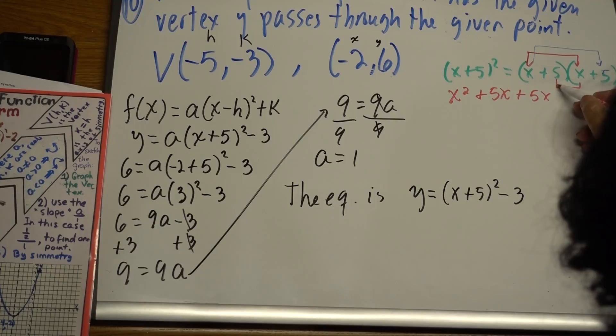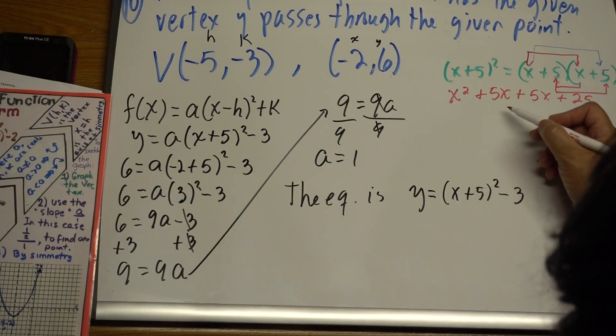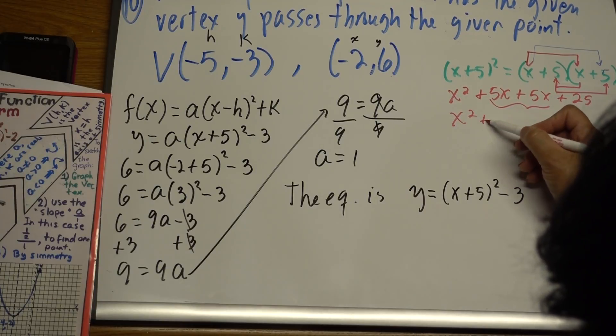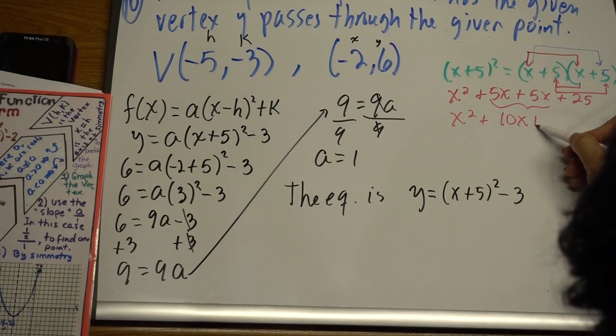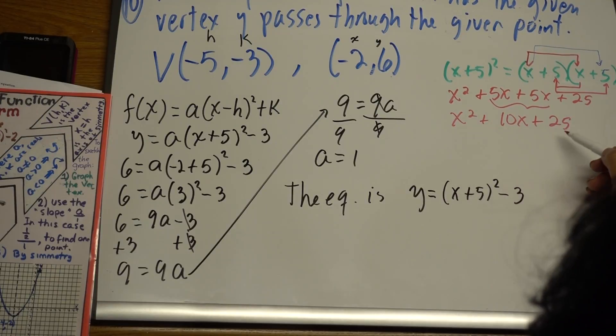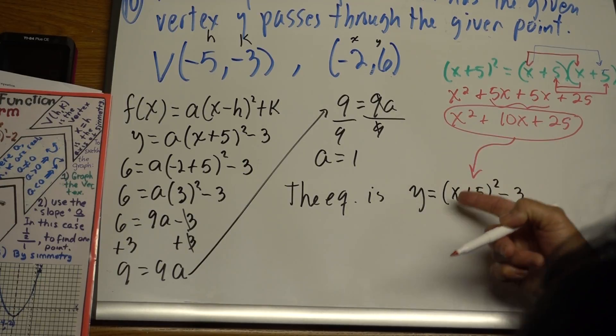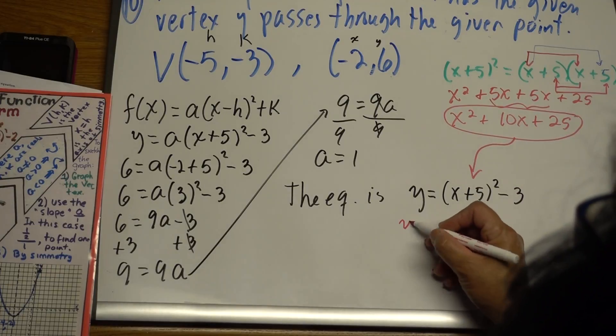And then the last ones, which is these two, plus 25. These two together give us 10x plus 25. So we have to put this one instead of this binomial. That's the answer of the binomial developed.